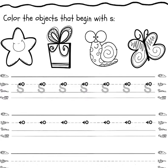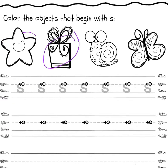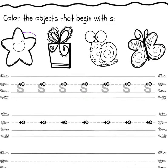Now, color the objects that begin with S. I'll point to each one and say what it is. First, we have a star, a present or a gift, a snail, and a butterfly. Again, color the objects that begin with S.